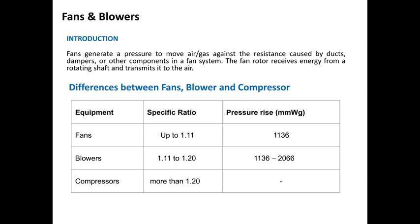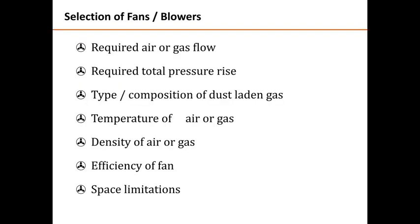The pressure rise in a fan is in the range of up to 1136 mm of water gauge. For blowers it is 1136 to 2066 mm. For compressors, the range may vary depending upon the situation. In this video we will be focusing only on fans and blowers.